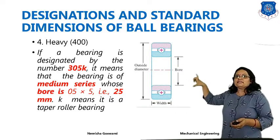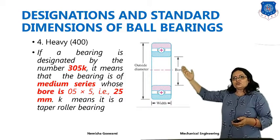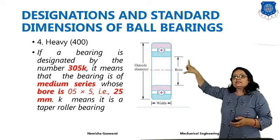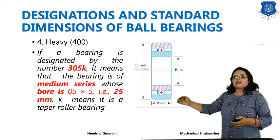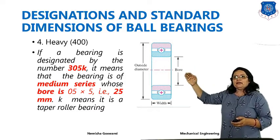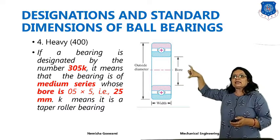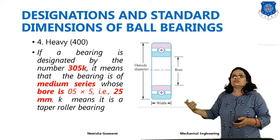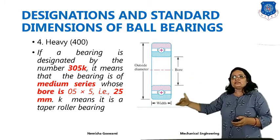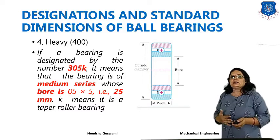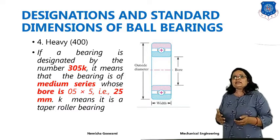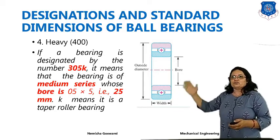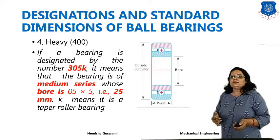Looking at the 2D diagram of the bearing, the top-to-bottom distance is known as the outside diameter, where the balls are placed inside the retainer is known as the bore, and the lower portion is known as the width. This represents the standard dimensions of a ball bearing — these are designed by these proportions.